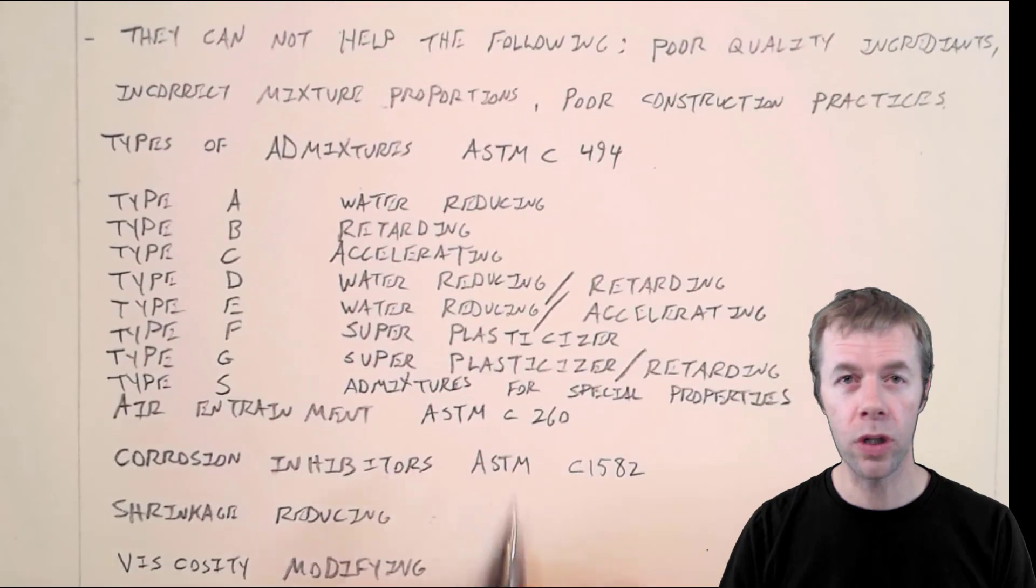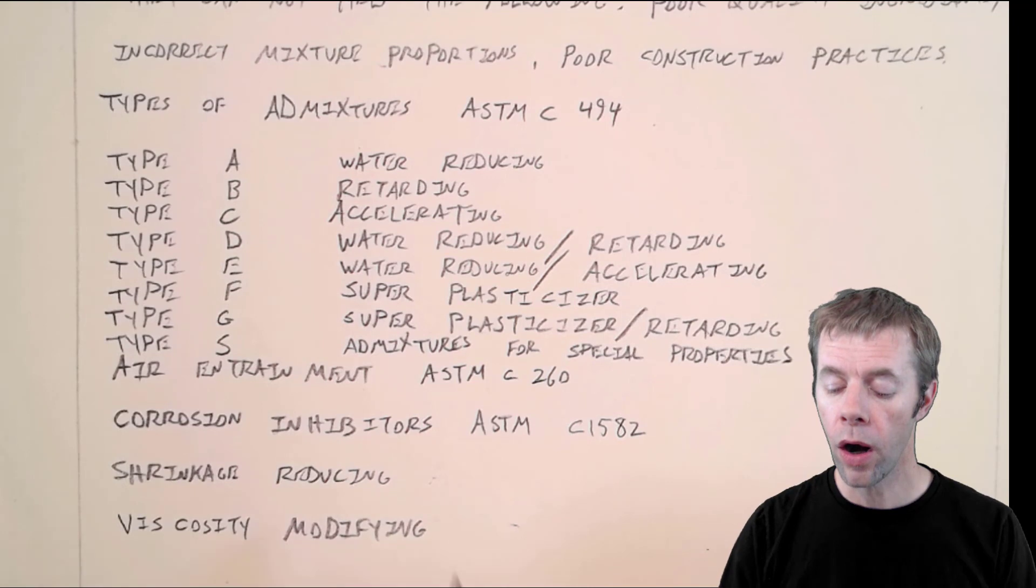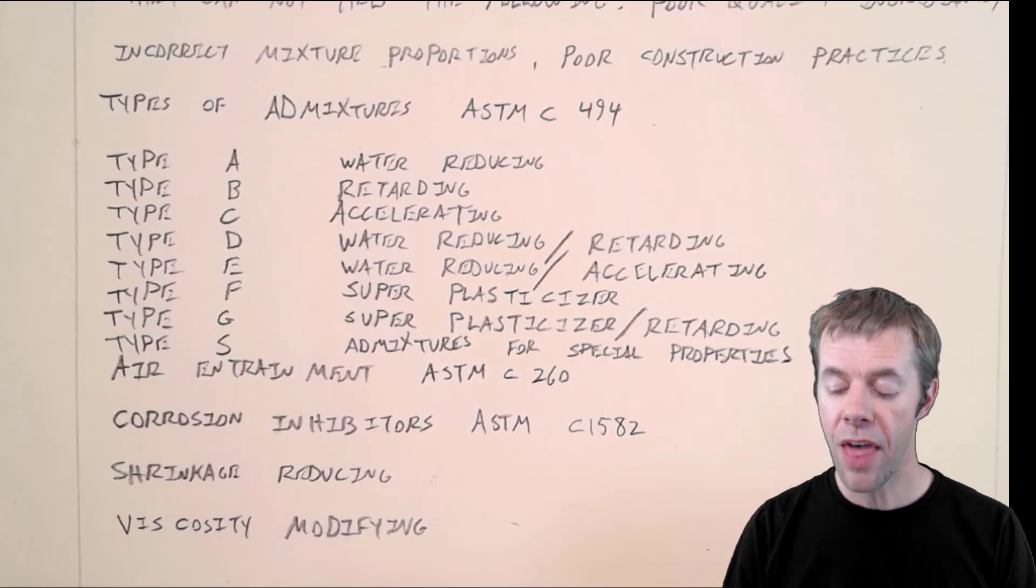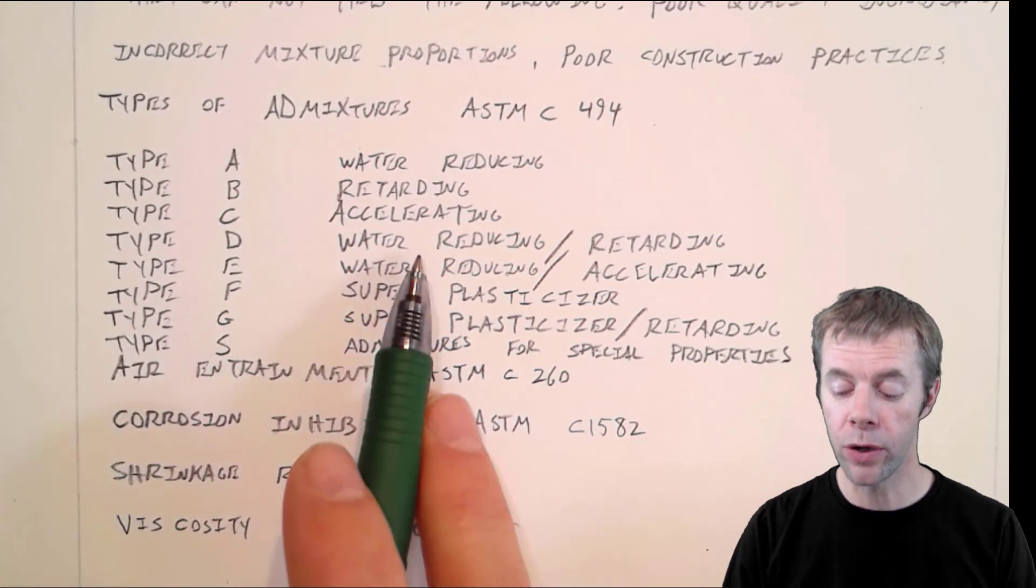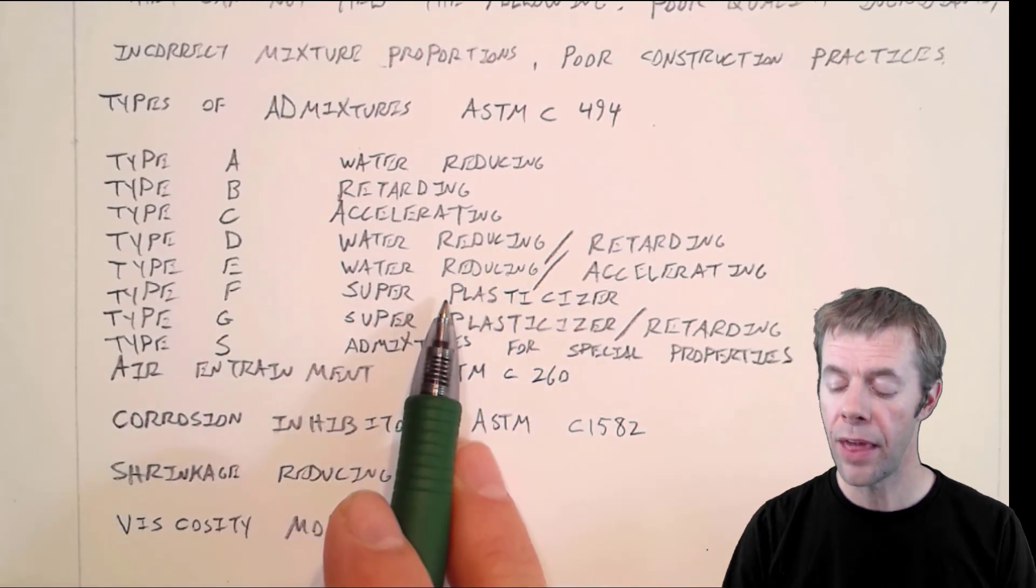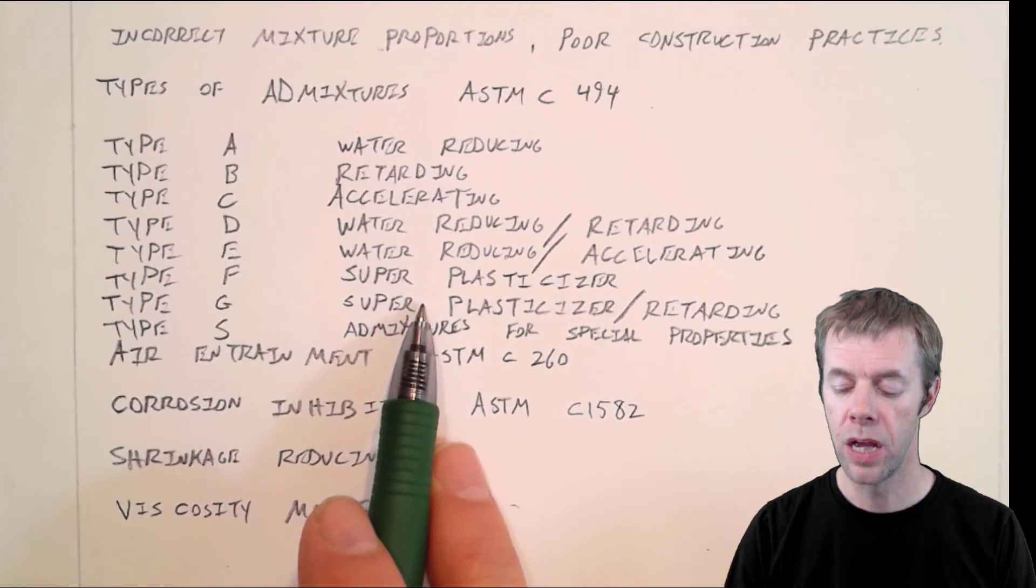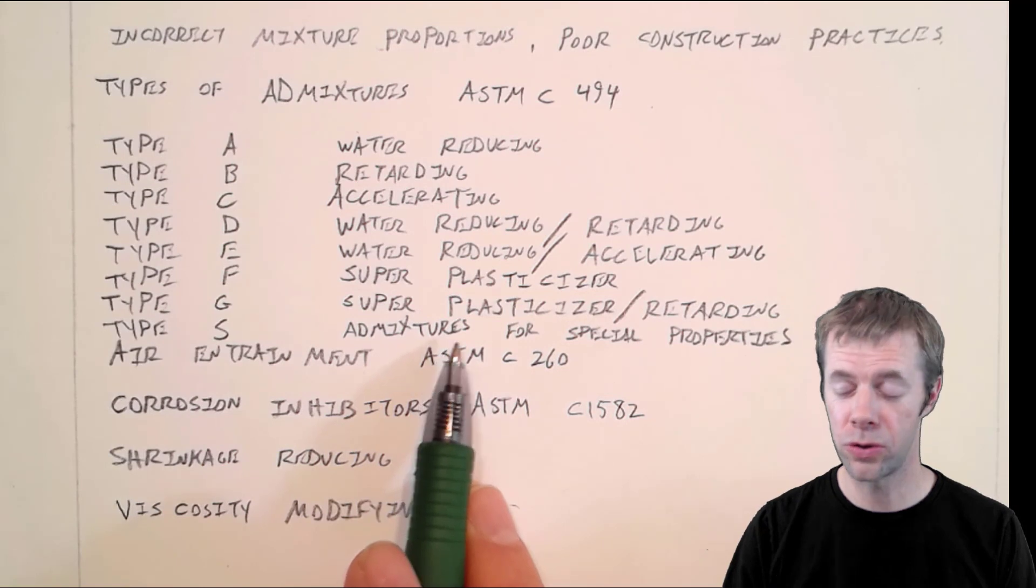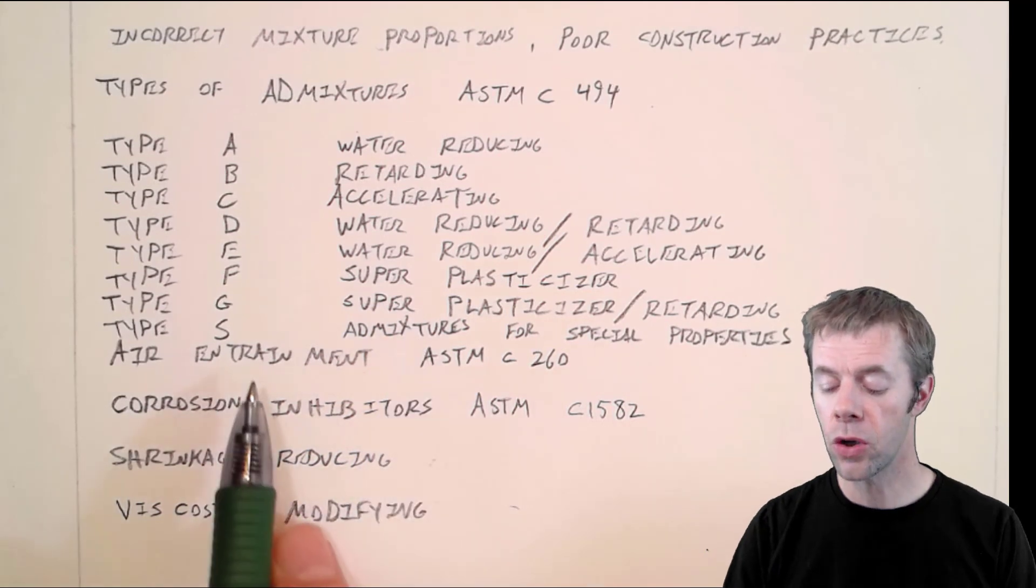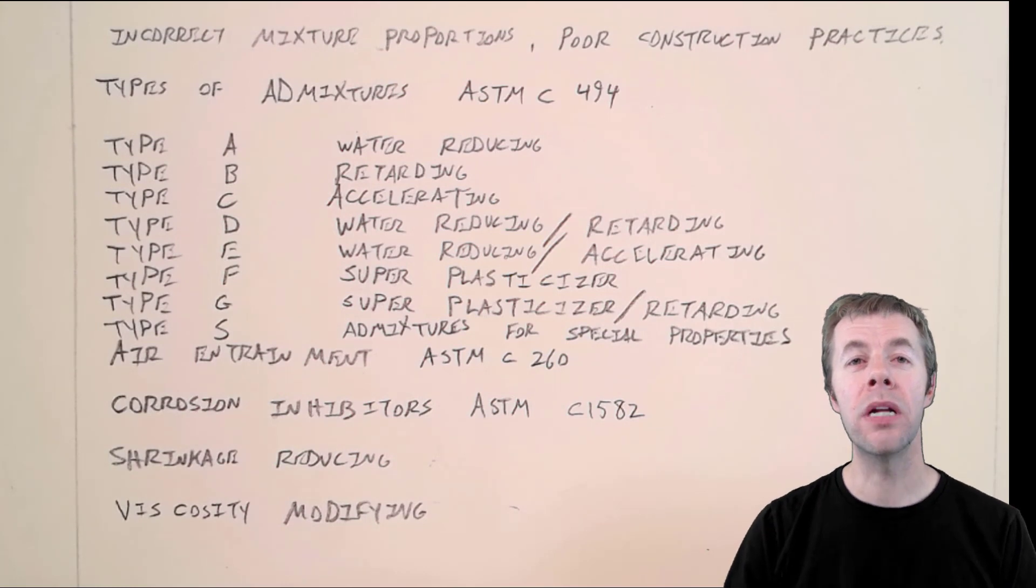Here are the general types of admixtures. There are water reducers, retarders, accelerators - type A, B, and C. Then they got better water reducers but noticed they retarded a little bit, so they needed a type D. They had another water reducer that would accelerate, that was type E. Then they got into the superplasticizers and superplasticizer retarders.